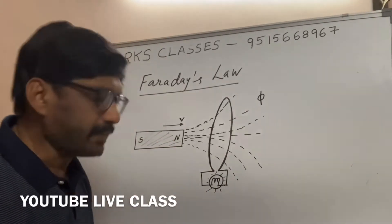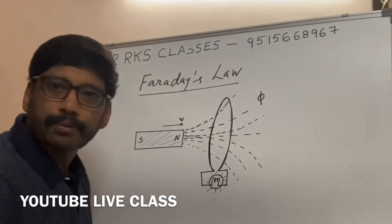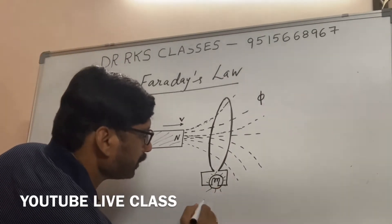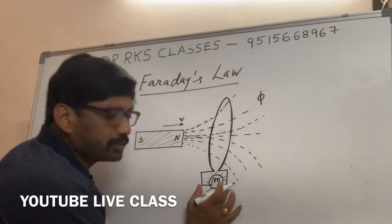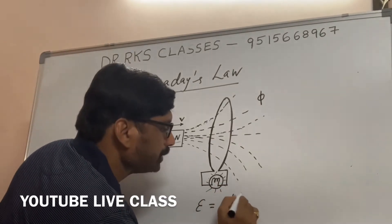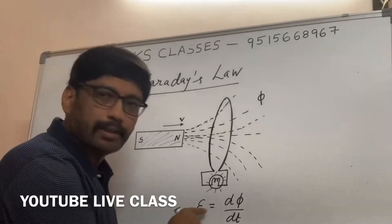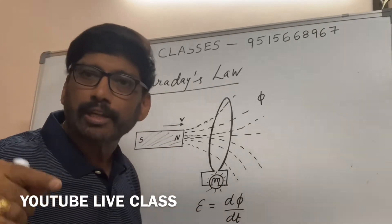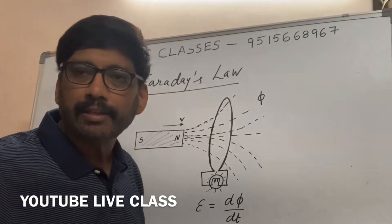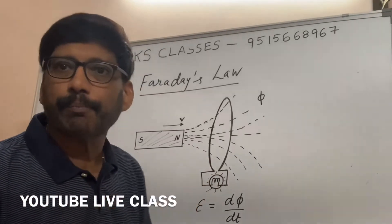What Faraday's second law says is, the EMF developed, the magnitude of EMF developed across this coil, is equal to the rate of change of flux, d phi by dt. So Faraday's first law is when EMF generated, the second law is how much EMF is generated.